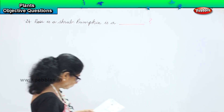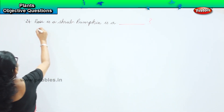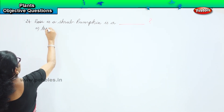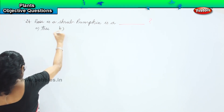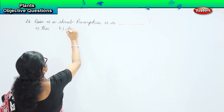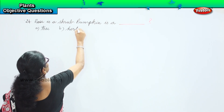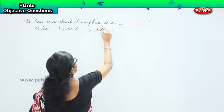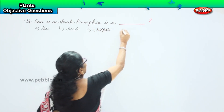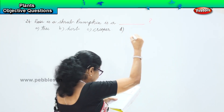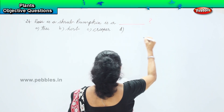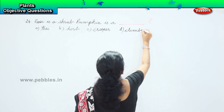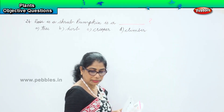The options are: A — pumpkin is a tree; B — it's a herb; option C — it's a creeper; and option D — it's a climber. Now which option is correct?